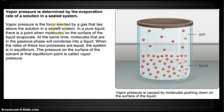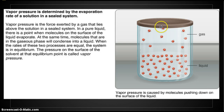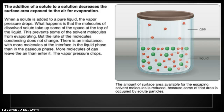Vapor pressure is the force exerted by a gas that lies above the solution in a sealed system. In a pure liquid, molecules on the surface evaporate, while gaseous molecules condense back into liquid. When the rates of these two processes are equal — say five molecules per minute going each direction — the system is in equilibrium. The pressure on the surface of the solvent at that equilibrium point is called vapor pressure.